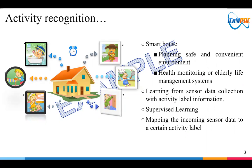Part of it, we plan on activity recognition in smart house systems. So by learning from sensor data collection with activity label information, we try to recognize activity in the next moment.